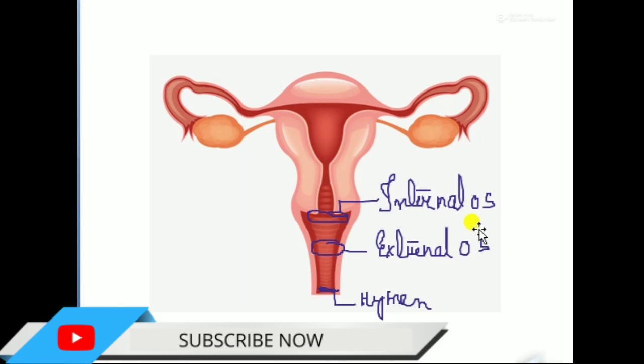The vagina is lined by non-keratinized stratified epithelium and acts as the birth canal. It is also the place where sperm would get deposited.